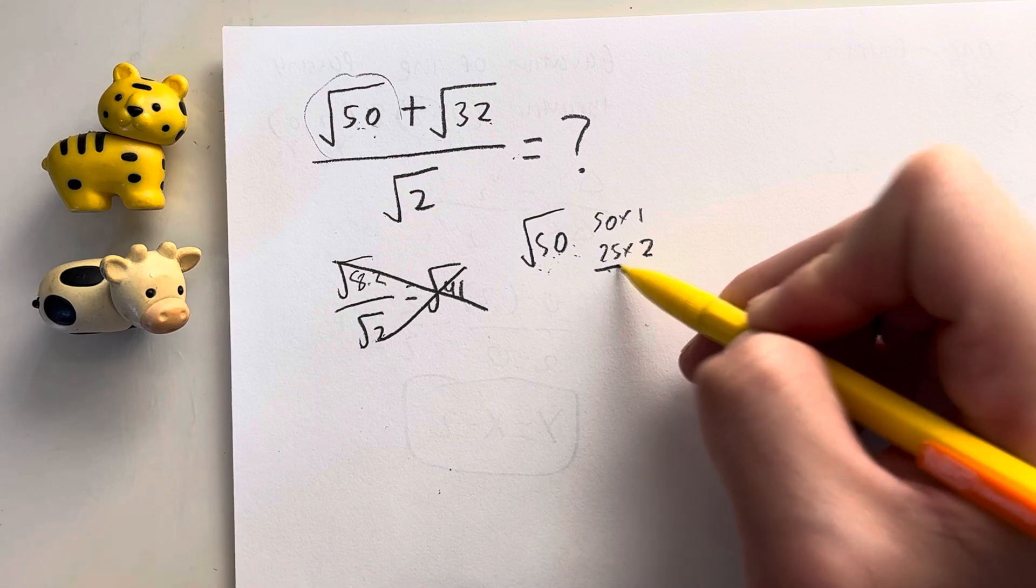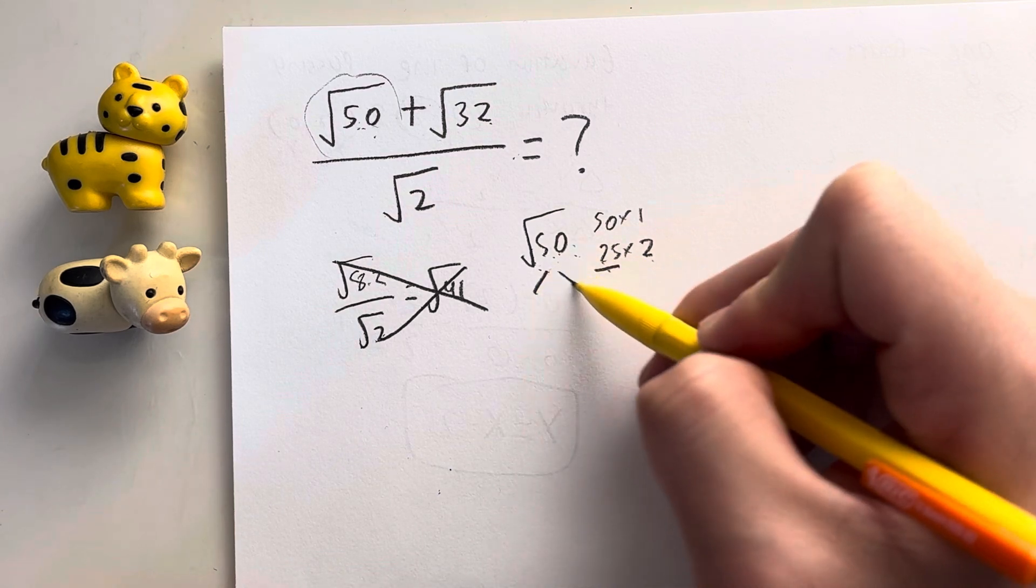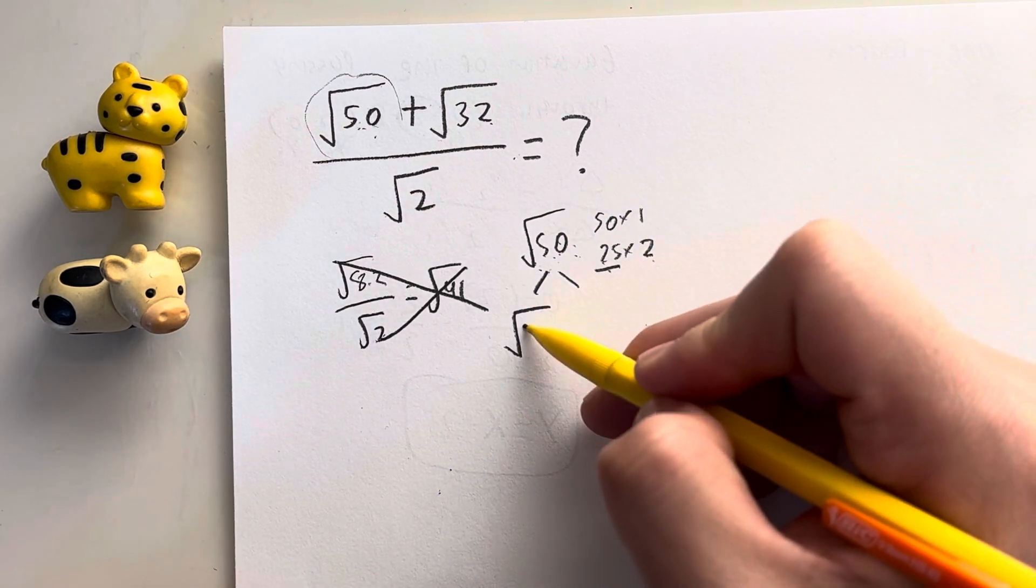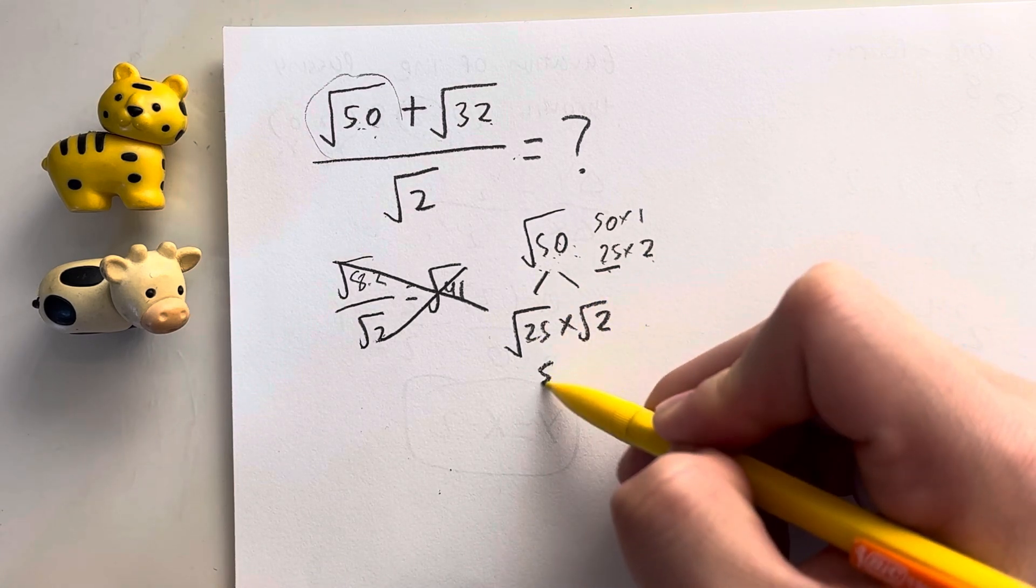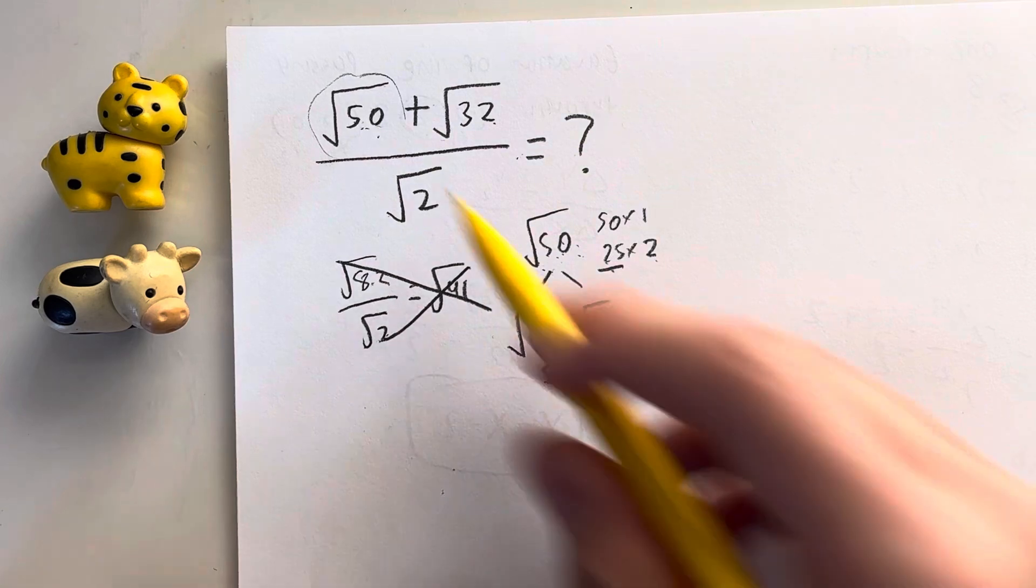Oh, look at that, 25 times 2. That's perfect because 25 is a perfect square. So the square root of 50 is equal to 25 times the square root of 2. And the square root of 25 is just equal to 5 root 2. So that fixes that.